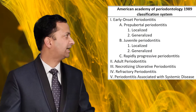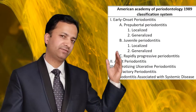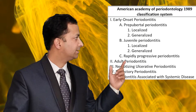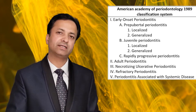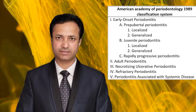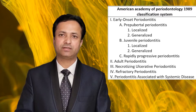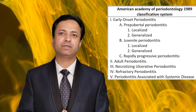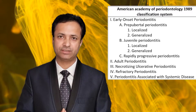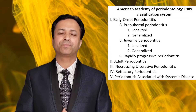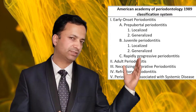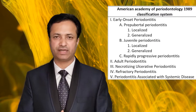One notable addition in the 1989 classification system was the category of periodontitis associated with systemic diseases, since many systemic diseases have periodontitis as one of their manifestations. These diseases were categorized into this separate category.